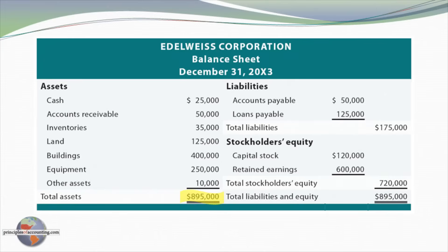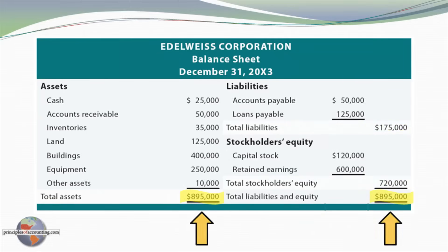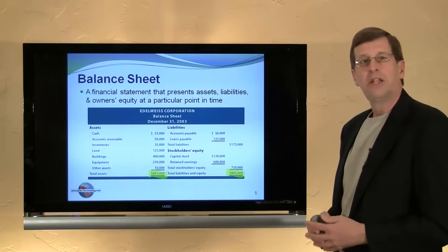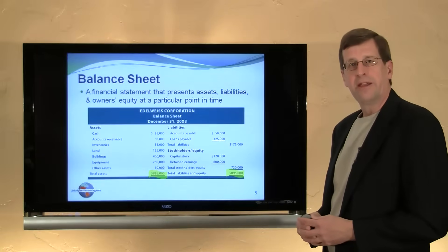The obligations of the entity — the total liabilities in this particular section — total $175,000. And for this particular corporation, you can see that the equity consists of capital stock $120,000 and retained earnings $600,000, giving us total equity of $720,000. So the $895,000 in assets equals the sum of the liabilities plus the equity. The balance sheet is a reflection of the fundamental accounting equation.